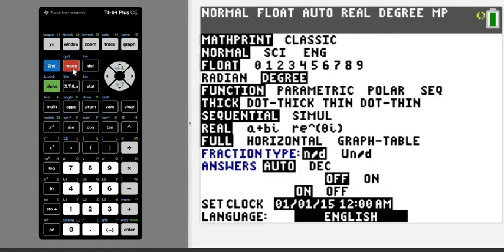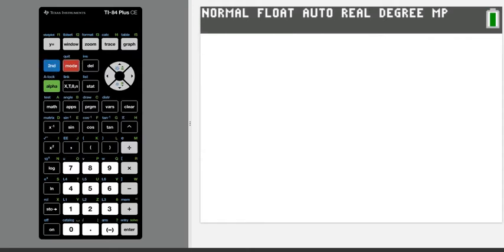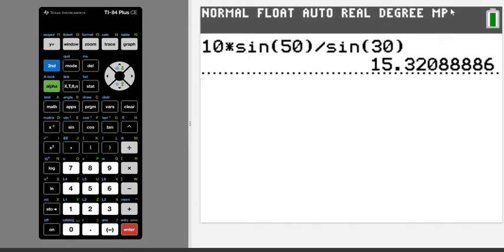So I'm going to go ahead and grab my TI-84 to show you how to plug it in here. I do want to make sure that my mode is in degrees, which it is. Typically it's in radians to start with, so I want it in degrees. And then all I have to do is plug into my calculator 10 times sin(50), make sure that you close the parenthesis, divided by sin(30). Okay, and then just hit enter and we end up with 15.32.